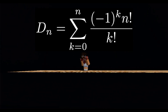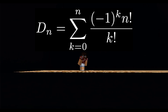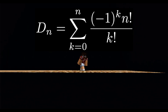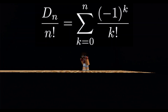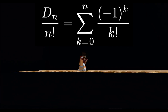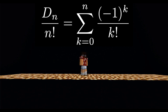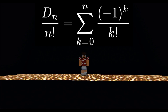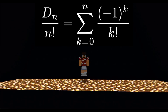The total number of orderings of the numbers 1 through n is n factorial. These orderings are called permutations. So if we divide the number of derangements by n factorial, we see the probability that a random permutation is a derangement is the sum from k equals 0 to n of negative 1 to the k over k factorial.